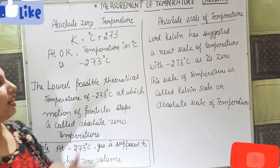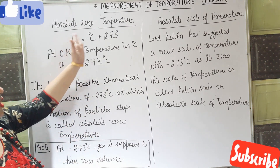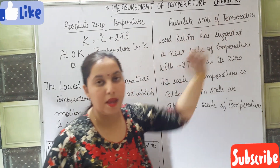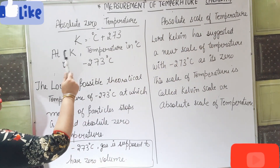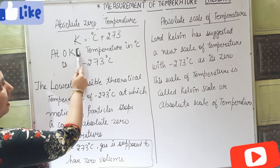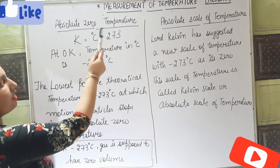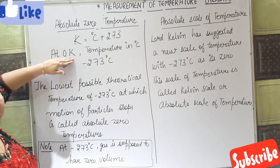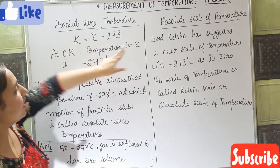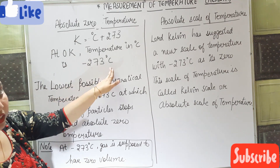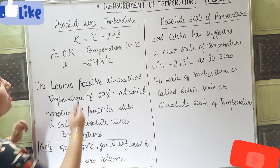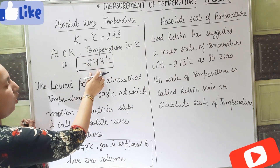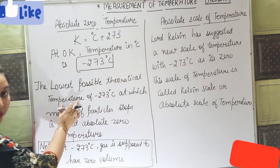Now let's discuss what is absolute zero temperature and what is the absolute scale of temperature. As you know the relation, Kelvin scale is equal to degree Celsius plus 273. At zero Kelvin, the temperature in Celsius scale will be minus 273 degree Celsius. So this minus 273 degree Celsius is the lowest possible theoretical temperature.